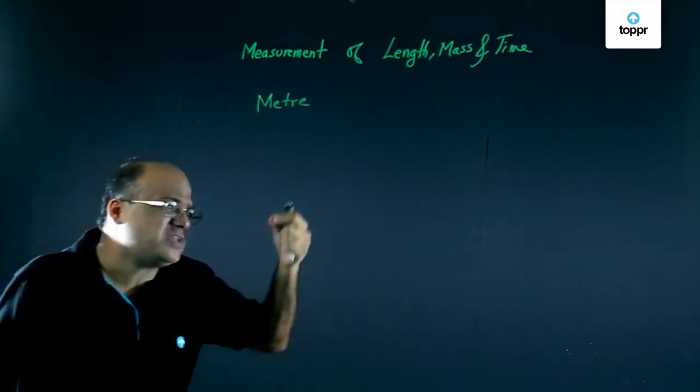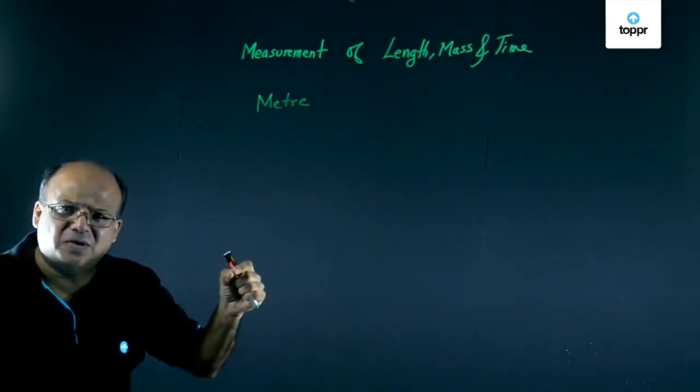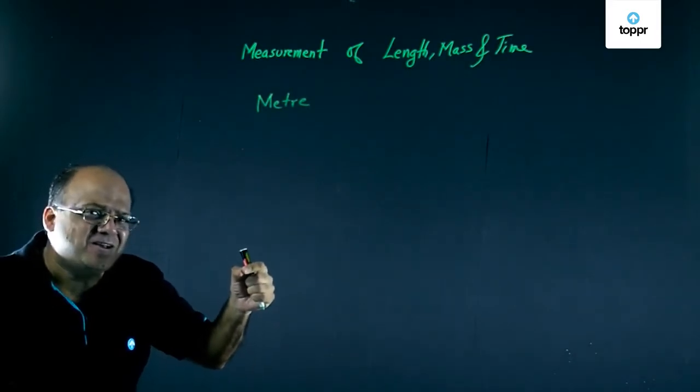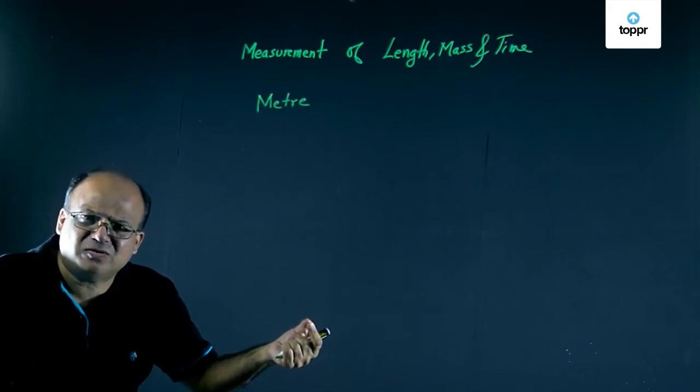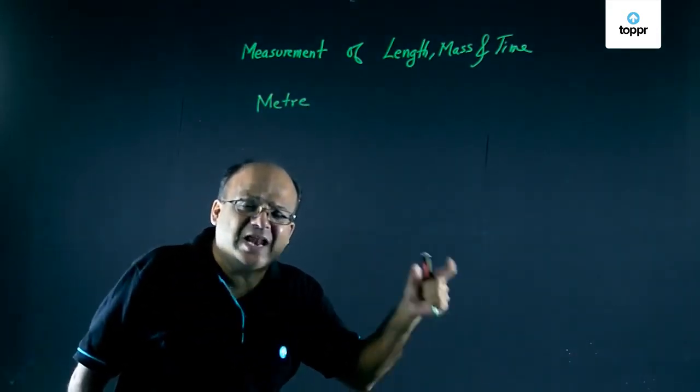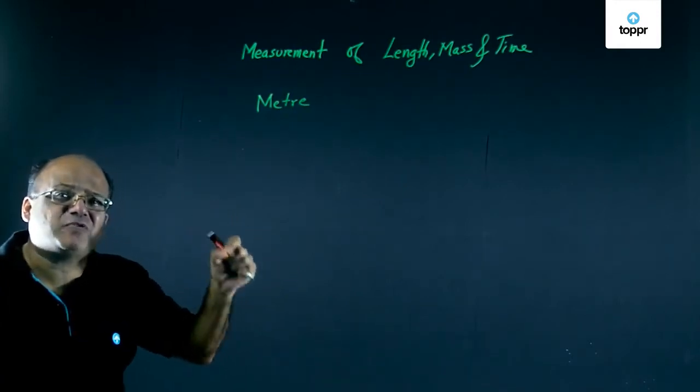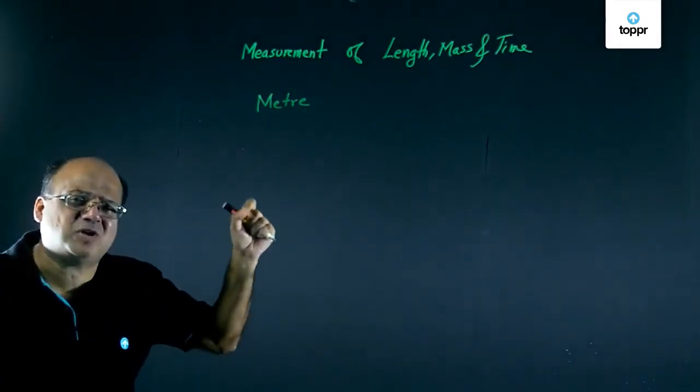Suppose we want to measure smaller things, then we have to use a microscope. How do you measure the radius of a nucleus? That is very very small. For that, we use electron microscope. In electron microscope, we use the wave nature of electron. So this way, we can measure small small things.